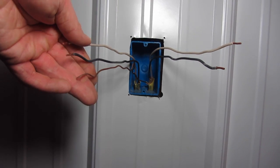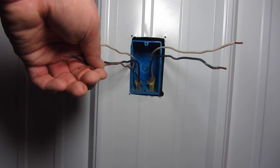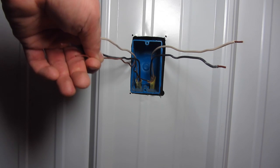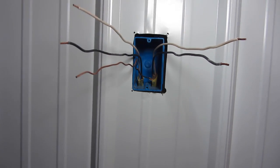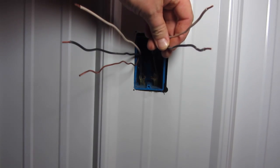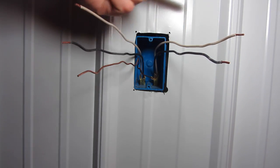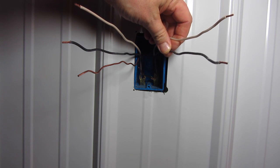One set will come off the switch and feed the outlet. This will be hot when we turn the switch on. We call that the line. The other set comes off of the outlet and feeds outlets downstream from it. We call that set the load.